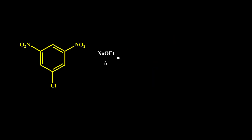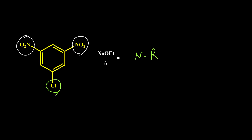In the next example, the leaving group is chlorine and we have two NO2 electron-withdrawing groups, but they are not on the correct positions — they should be on the ortho or para positions relative to the leaving group. So we don't have the conditions for NAS reaction, and the answer is no reaction for this example.